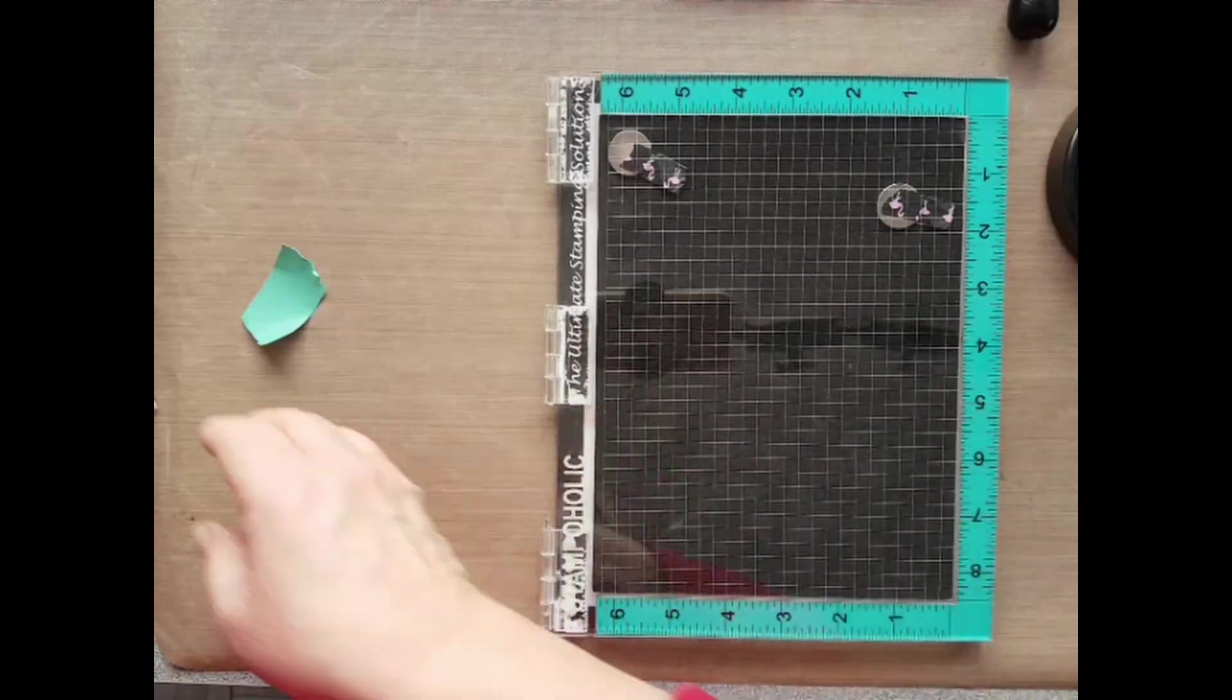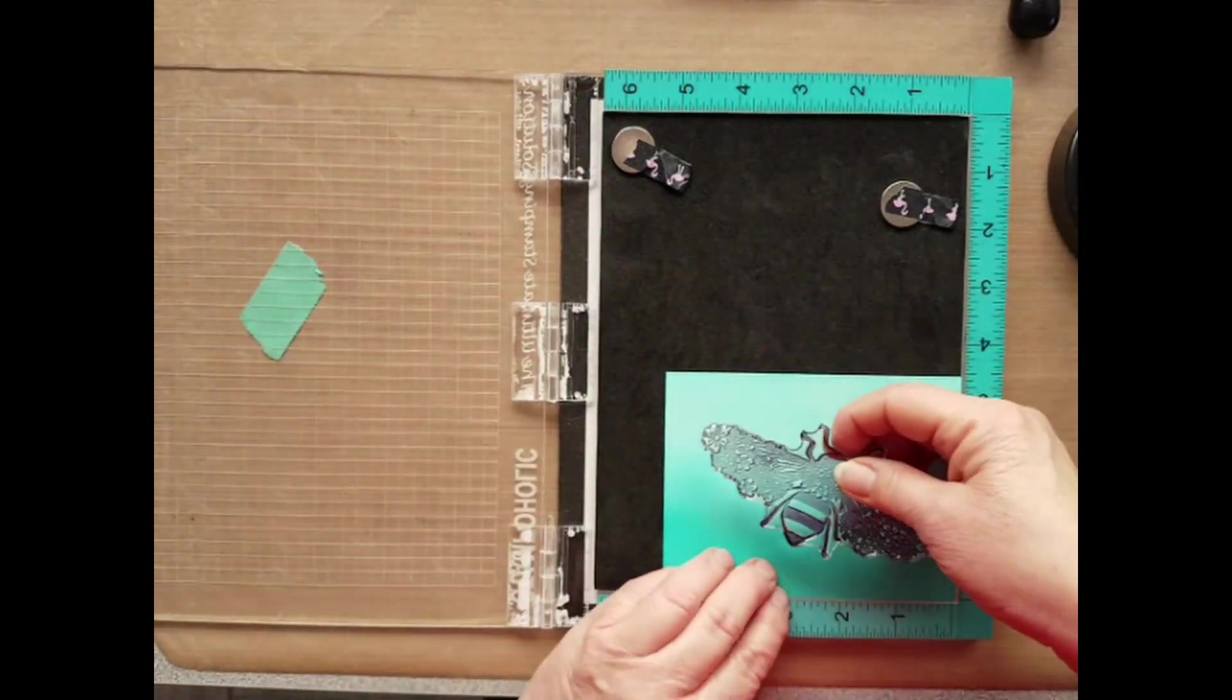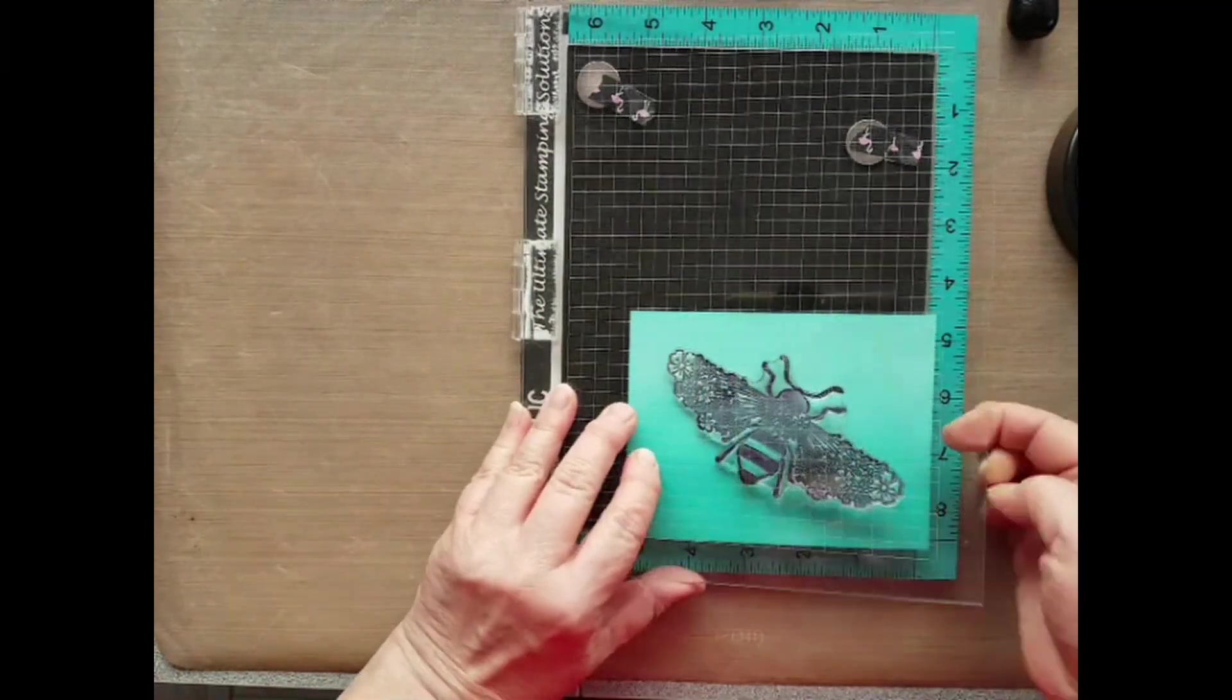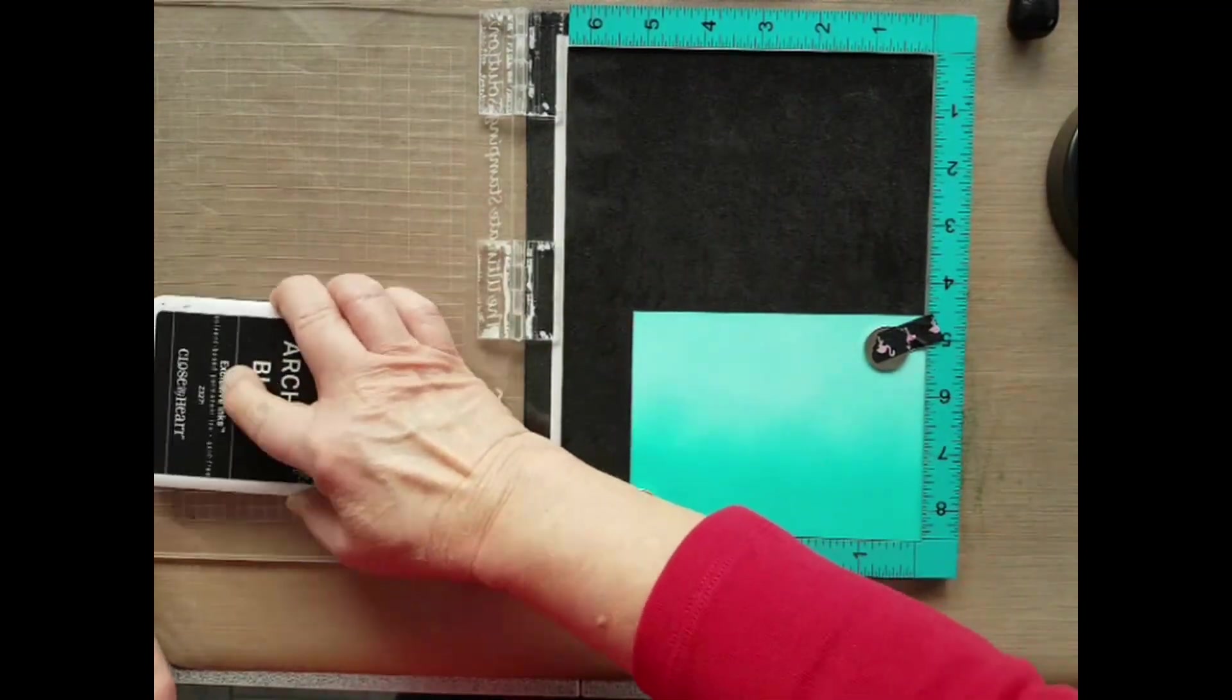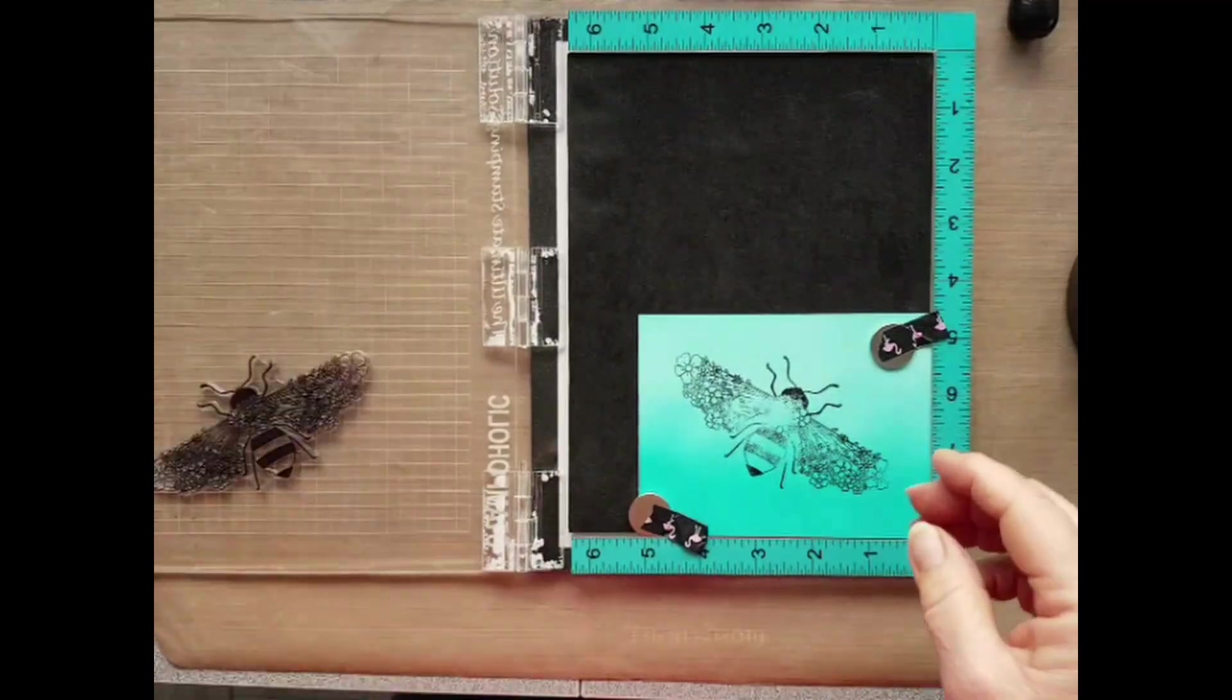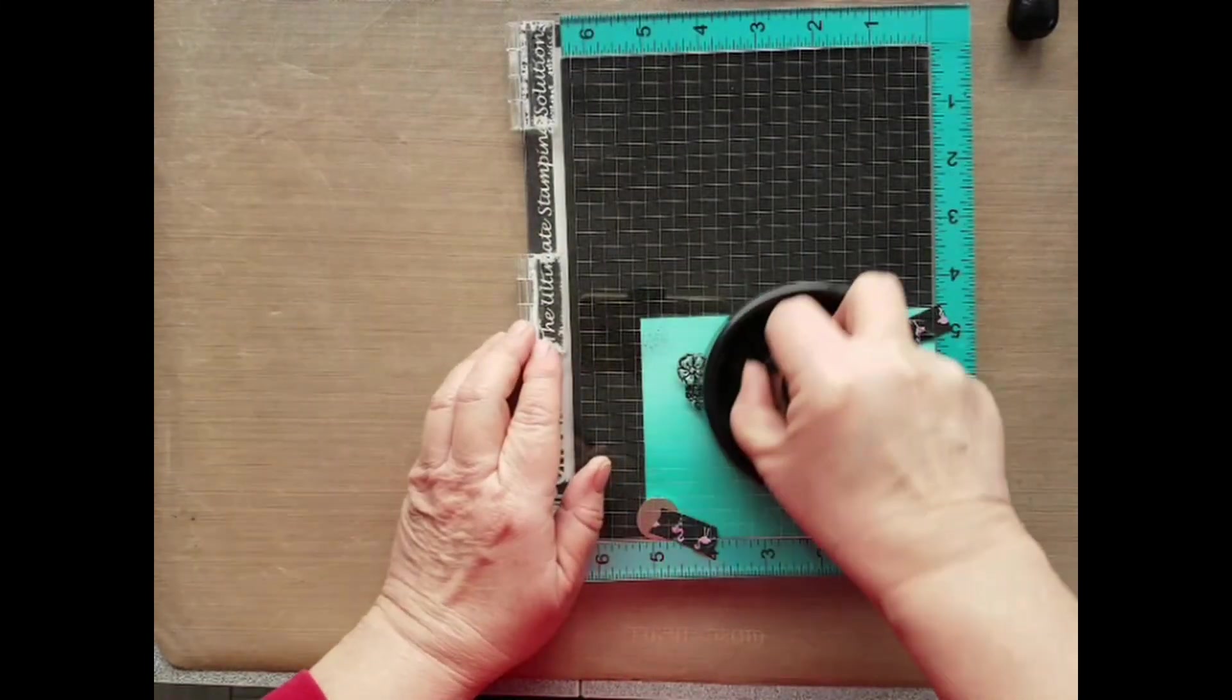Using the Bee's Knees stamp of the month from Close To My Heart and a stamping platform, place your cardstock in there with your magnets. Ink it up in archival black ink and you'll probably need to do it again as I have here to give a good stamping impression.